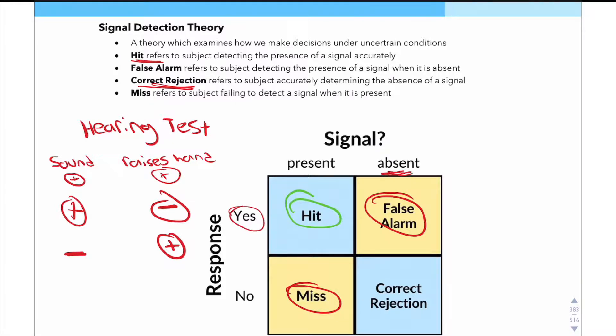And that leaves us with correct rejection. So correct rejection is going to be when the signal is absent, and the subject does not raise their hand. In that case, you're going to get a correct rejection.